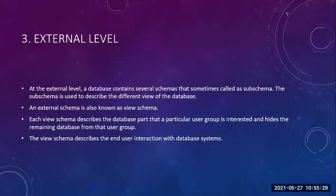The last one is the external level, which is completely outside. The external level contains several schemas — sometimes also called sub-schemas — which are used to describe different views of the database. As I told you in the beginning, I want to view only the name and percentage; that is my view. Another person wants to view the name, marks of all subjects, and percentage; that is his view. So the external model is a subset of the database — a sub-schema. The external schema is also known as the view schema.